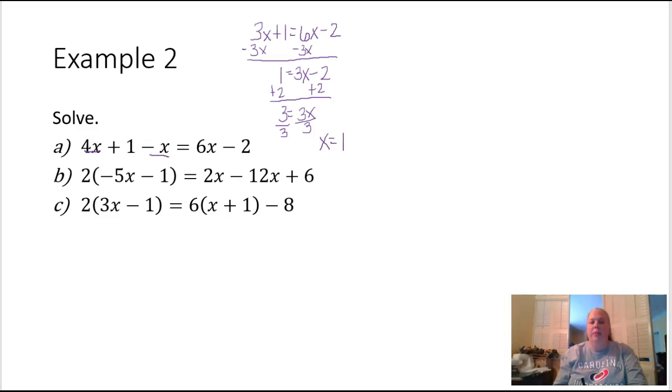Now let's look at equation B. Let's distribute the 2 into the parenthesis. This is going to give me negative 10x minus 2, and this will be equal to 2 minus 12x plus 6.